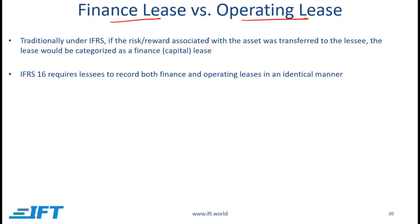Finance lease versus operating lease. Traditionally under IFRS, if the risk and reward associated with an asset was transferred to the lessee, the lease would be categorized as a finance lease. In the US, a finance lease is also called a capital lease. In that situation, the accounting would involve recognizing an asset and a liability on the lessee's balance sheet. In the past, if the risk and reward was not transferred to the lessee, the lease would be recorded as an operating lease, and the asset would not be transferred to the balance sheet of the lessee.